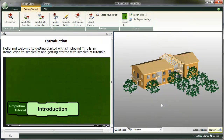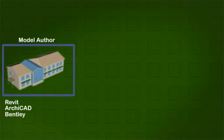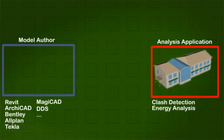Before we go into the first actual workspace, let's have a short look at the ideas behind SimpleBIM. SimpleBIM is a professional BIM exchange solution for the construction industry. BIM exchange means that you exchange building information models between different applications, typically between a design application and an analysis application, like quantity takeoff or energy analysis.